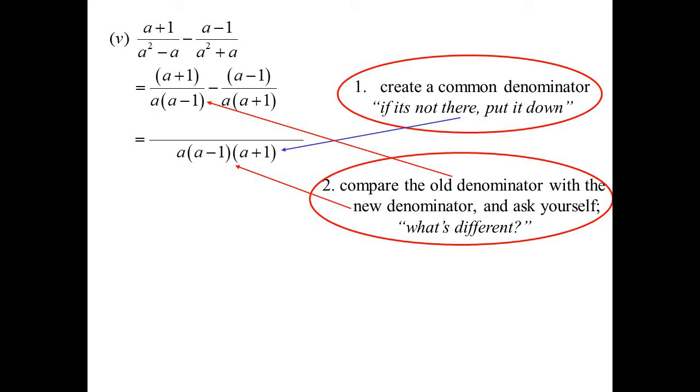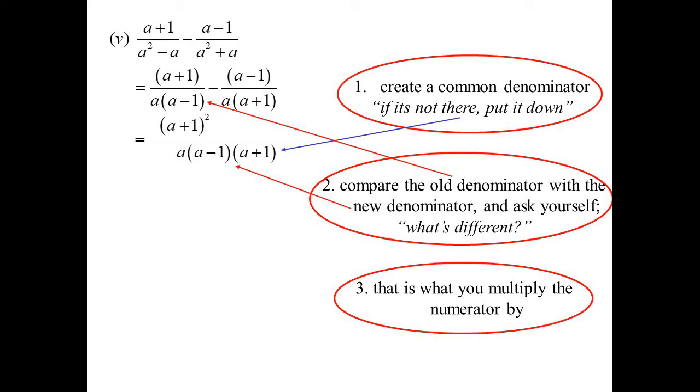It's now a, a minus 1, a plus 1. What's different? a plus 1. So that is what we'll multiply the top by. So that a plus 1 now becomes a plus 1 squared.